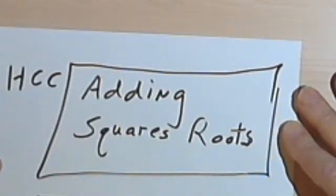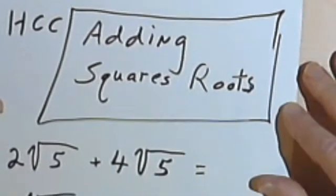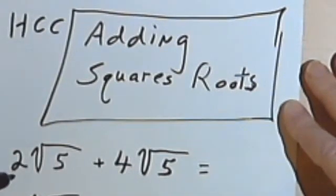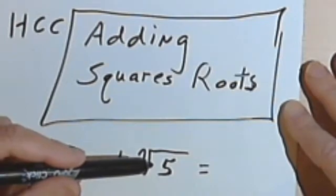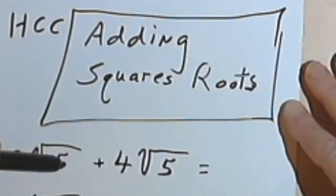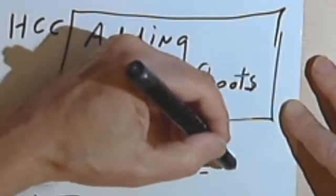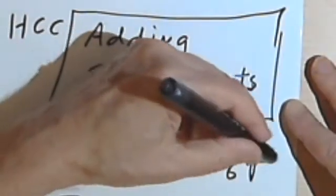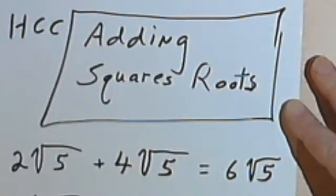This video is going to be about adding square roots. If I have a problem like 2 times the square root of 5 plus 4 times the square root of 5, then adding the square roots is pretty simple since they're both the same thing. So I've got 2 and 4, that's going to give me 6 times the square root of 5.